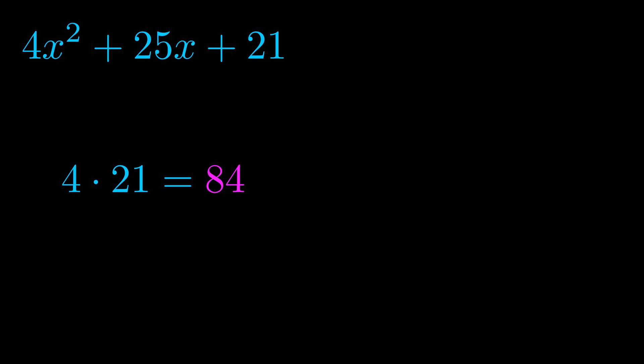Step two is to find all of the pairs which multiply to this number. You don't really need to find all of them, but go ahead and write down as many numbers as you can that multiply to the magenta value.